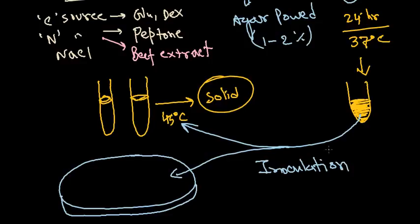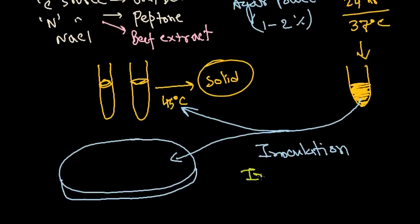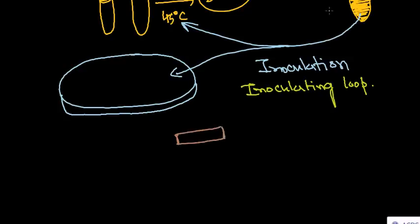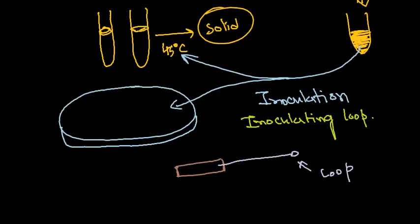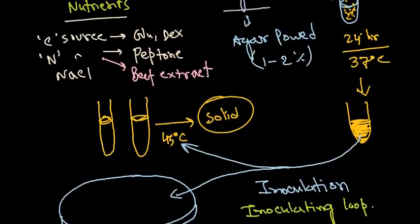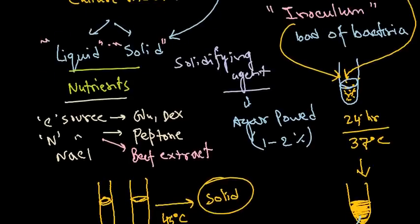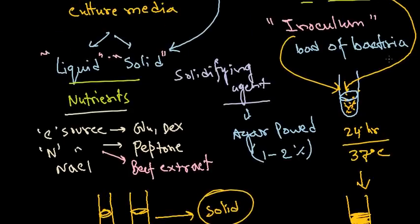The inoculation process is carried out using a small device called an inoculating loop. It has a loop-like structure at the terminal end, which is why it's called an inoculating loop. You dip this loop into the inoculum media and transfer it onto either liquid or solid media. How to properly inoculate will be discussed in the next video.